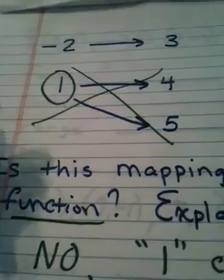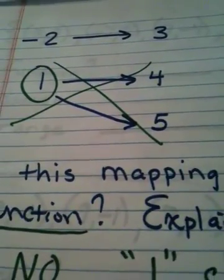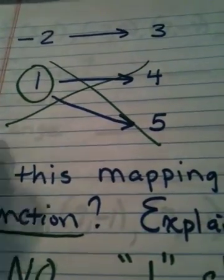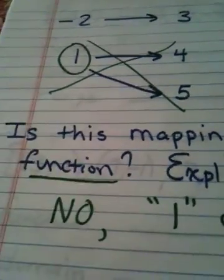Understand that the words mapping, correspondence, and set of ordered pairs are all saying the same thing. What makes something a function is when the x values pick only one y value to stay with. They never change their mind.